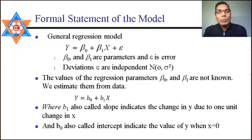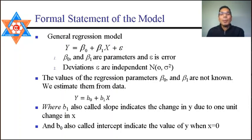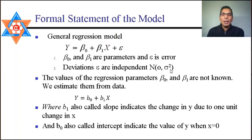The formal statement of the simple linear regression model is: y = β₀ + β₁x + ε. β₀ and β₁ are the parameters, measured from the population, and ε is the error. The assumption is that the deviations of ε are independent with a mean of 0 and variance σ².